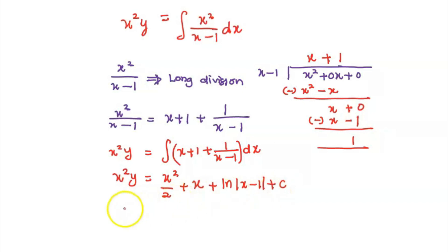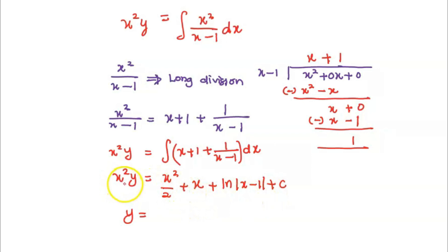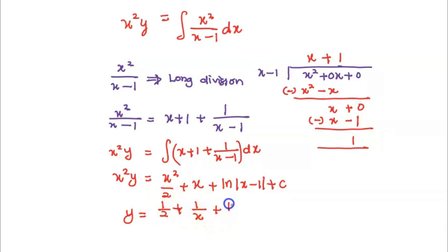So if we make y the subject, then we will have the general solution as the entire right-hand side divided by x squared. We will have y equals 1 over 2 plus 1 over x plus ln|x minus 1| over x squared plus c over x squared as the general solution.